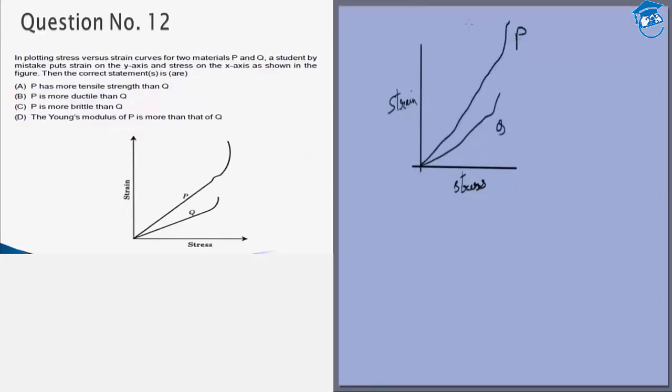So the first option is P has more tensile strength than Q. Now tensile strength is a measure of how quickly an object breaks, and we see that Q actually breaks before P. So P does indeed have more tensile strength than Q.